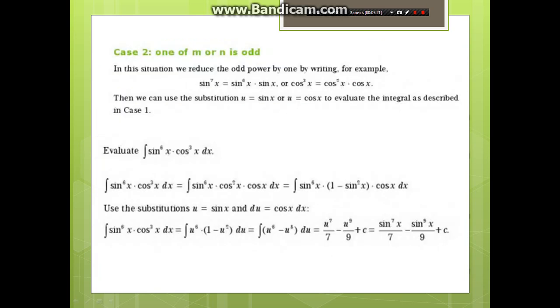Case 2: one of m or n is odd. In this situation, we reduce the odd power by one by writing, for example, sin³x = sin²x · sin x. Then we can use the substitution u = sin x or u = cos x to evaluate the integrals as described in Case 1. Using u = sin x and du = cos x dx, we will get the answer.